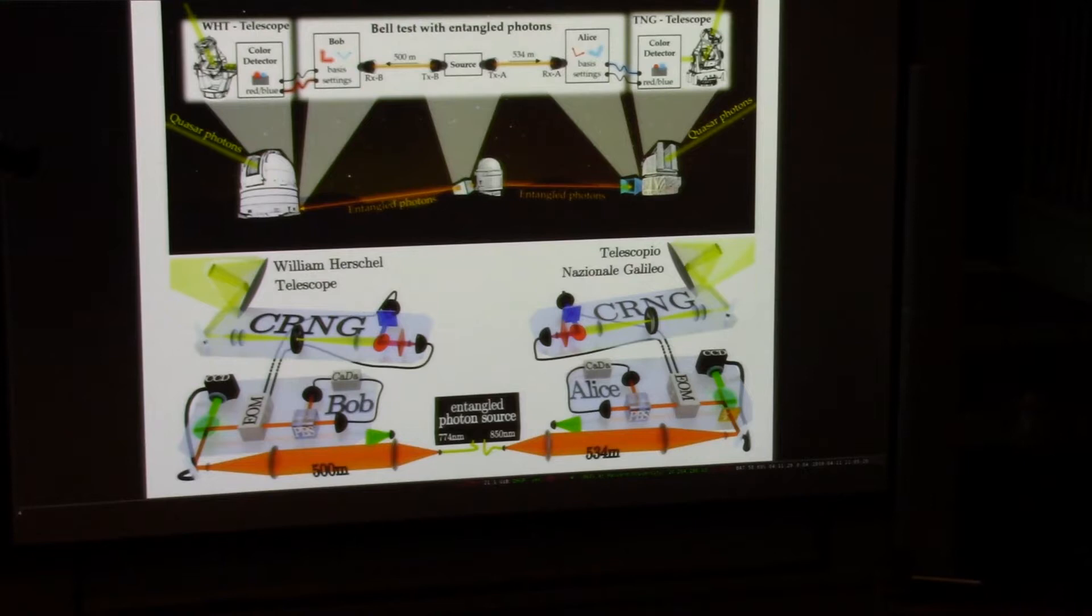So I'll unpack this diagram here. At the center here, this is our source of entangled photons. We're not using the telescope dome in the middle here. We just have a little shipping container that we rented from some container company on the island. We put all of our optics in there, and we generate entangled photons inside that laboratory. We send those entangled photons over hobby telescopes, about 500 meters on each side, to opposite sides of our casino, which in this case turns out to be two different mountaintops.